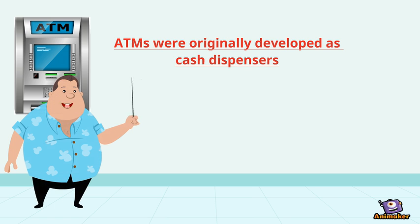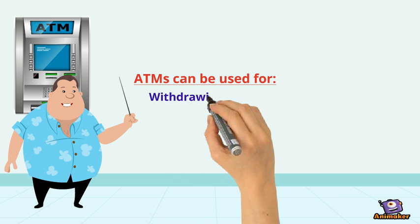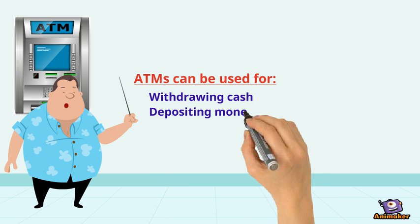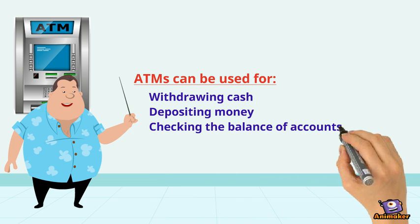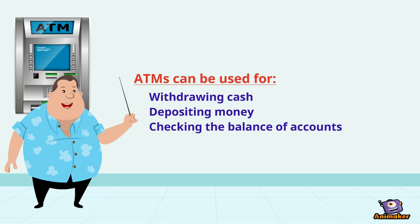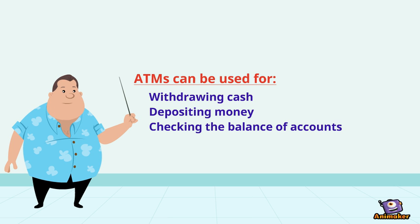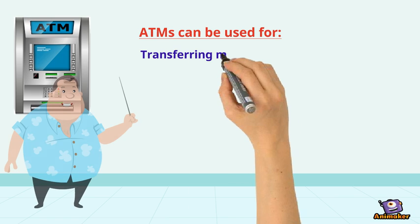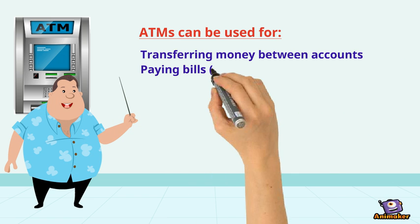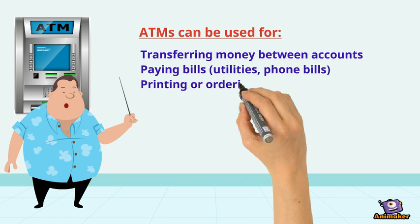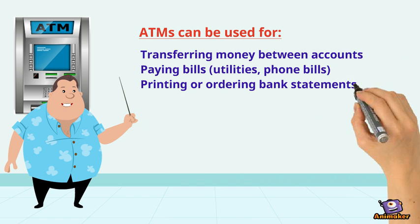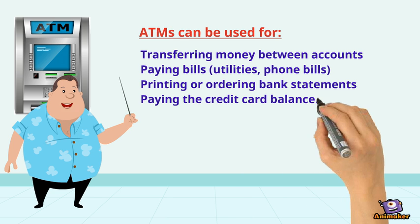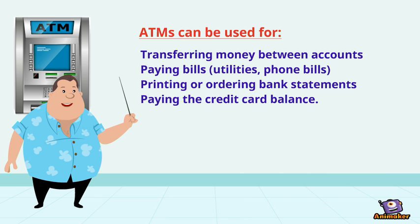ATMs were originally developed as cash dispensers and have evolved to provide many other bank-related functions. ATMs can be used for withdrawing cash, depositing money, checking the balance of accounts, transferring money between accounts, paying bills such as utilities and phone bills, printing or ordering bank statements, and paying the credit card balance.